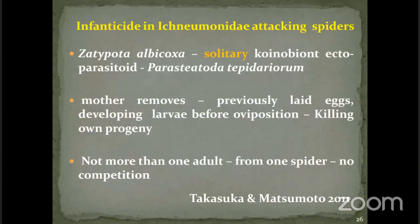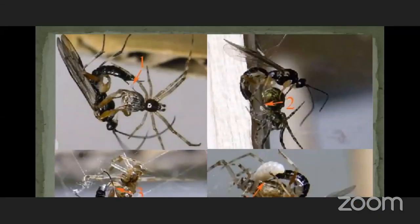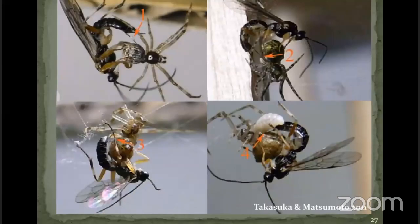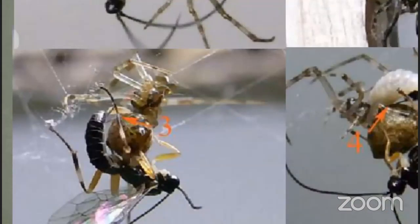For that purpose, she removes the eggs and other developing larvae before laying her eggs. She not only removes grubs and larvae of other groups of parasitoids developing on the spider, but also her own eggs and fully grown larvae — even fully grown larvae are removed before she lays her eggs. The first image shows she is removing her own previously laid eggs; in the second image, you can clearly see the egg being removed; in the third, the initial instar larva is being removed; and in the fourth, even the fully grown larva of the same wasp species is being removed. This phenomenon is called infanticide — killing its own progeny to avoid competition.